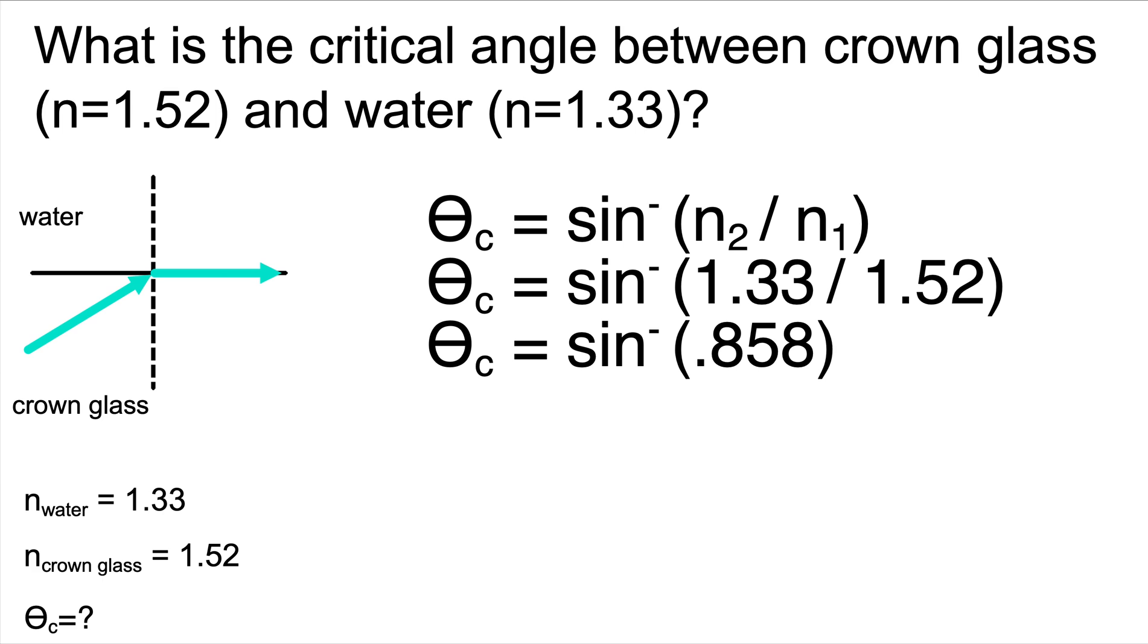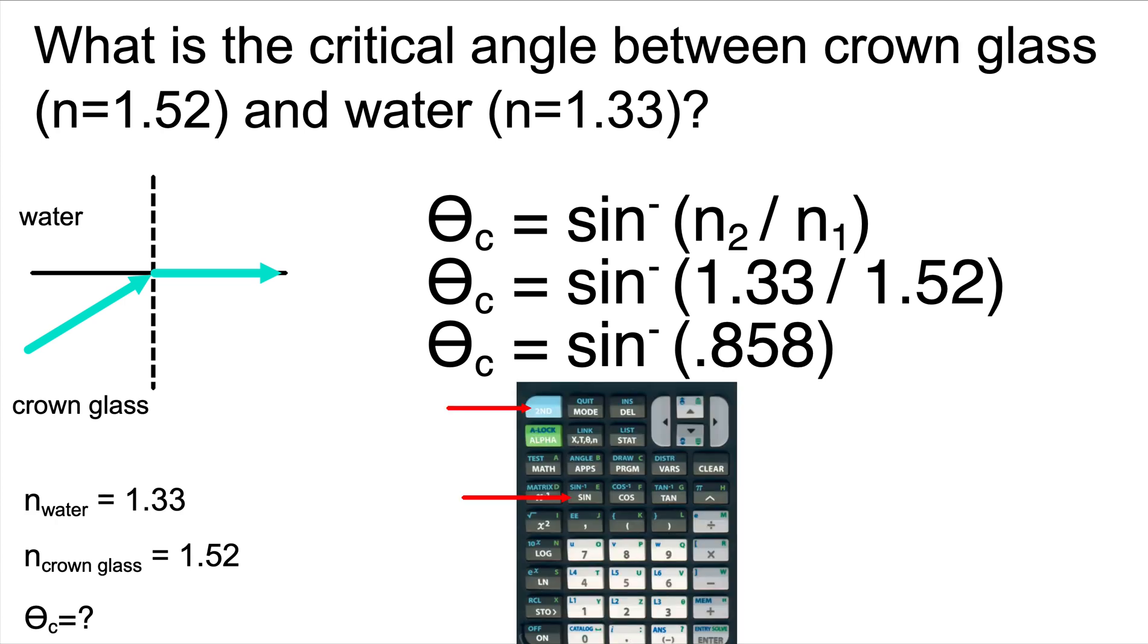Now we need to take the inverse sine of 0.858. Depending on your calculator, you can either hit the sine inverse button. More likely, you'll have a keypad that looks like this. You'll have to hit the second button that will be on the upper left, and then the sine button. When you do that, it activates the inverse sine function.